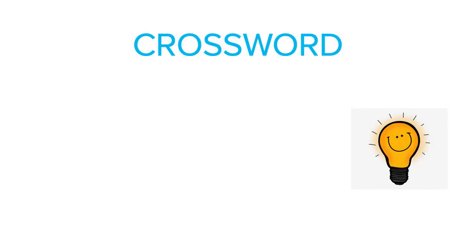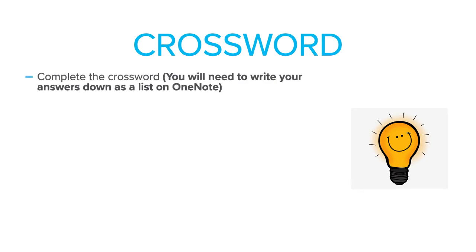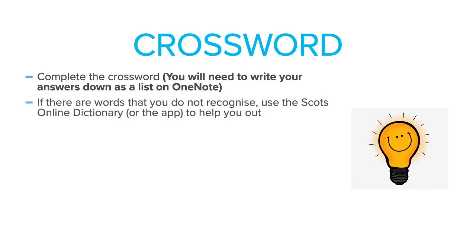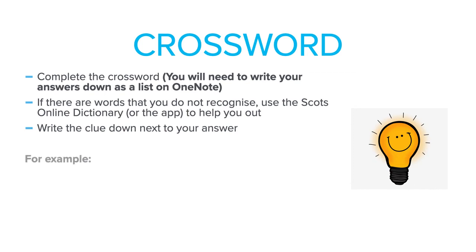The next thing we're going to do is have a go at a Scots crossword. You can complete it by taking a screenshot and annotating it on your iPad. If there are words in the crossword that you don't recognise, you can use the Scots online dictionary or the app to give you a wee hand. As you're working through, make a note of the words and write the clue next to them — so don't just write the answer, write the clue as well. To give you a wee example, the first one is 'beastie', and the clue is 'a creature or animal'. That way, if you want to use these words in your drama script later, you already know what they mean and you're expanding your vocabulary.